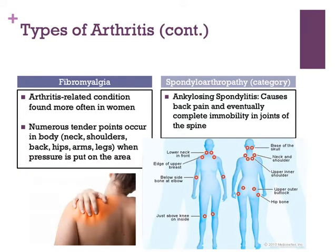Two other common systemic conditions are fibromyalgia and spondyloarthritis. Fibromyalgia is an arthritis-related condition found more often in women than in men that causes widespread muscle tenderness. There are numerous tender points occurring in various places such as the neck, shoulders, back, hips, arms, and legs. Within the spondyloarthritis category, ankylosing spondylitis is the most common and causes severe back pain, eventually leading to complete immobility of the spine.